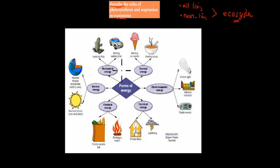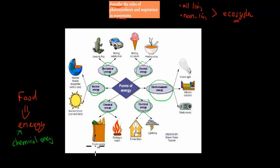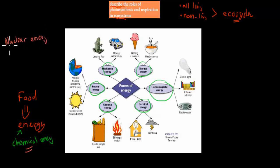Before we start, I want to quickly go over what energy actually is, because we talked about it in the last video and we're going to talk about it again. Food obviously has energy, but where did food get that energy from? Food has energy in the chemical form. There are different types of energy: chemical, nuclear, mechanical, thermal, electromagnetic, and electrical energy. Food is in the form of chemical energy, and it originally gets that energy from the sun — nuclear energy from the sun transformed into chemical energy in the form of food. That's basically the role of photosynthesis and respiration in a nutshell.